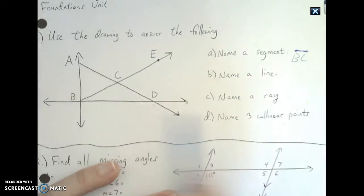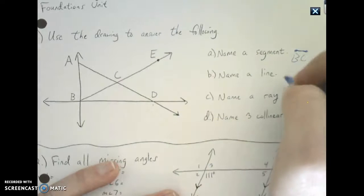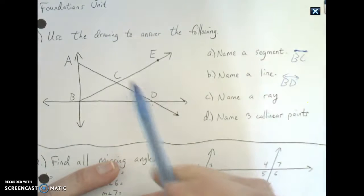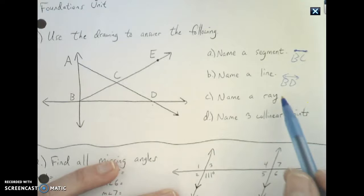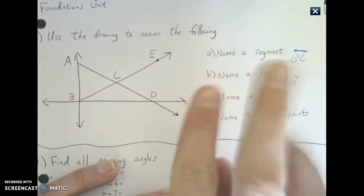You want to make sure you go through two points where there are two arrows. So in this case, B, D. You could have also said something like A, B. If you wanted to name this line a different way, you could have said D, B. That's fine. Switch the letters around.